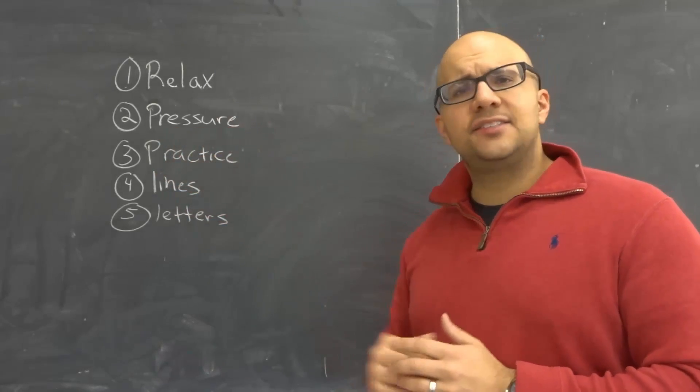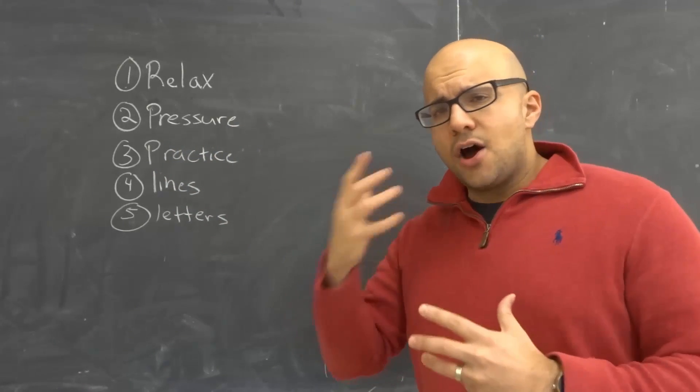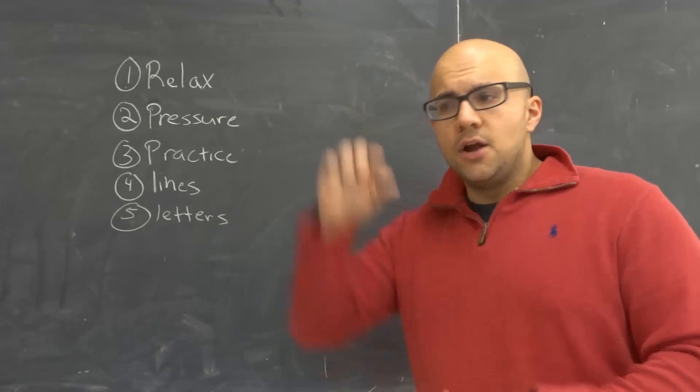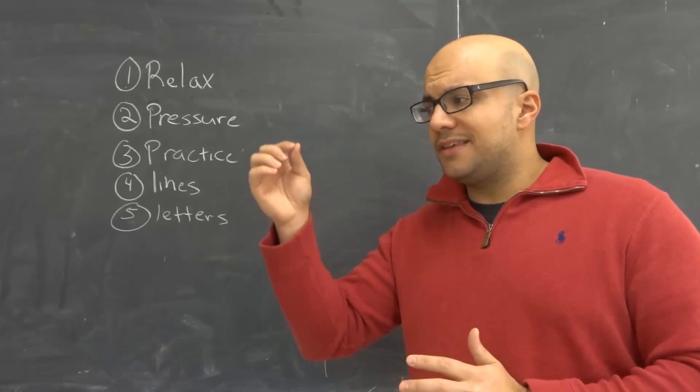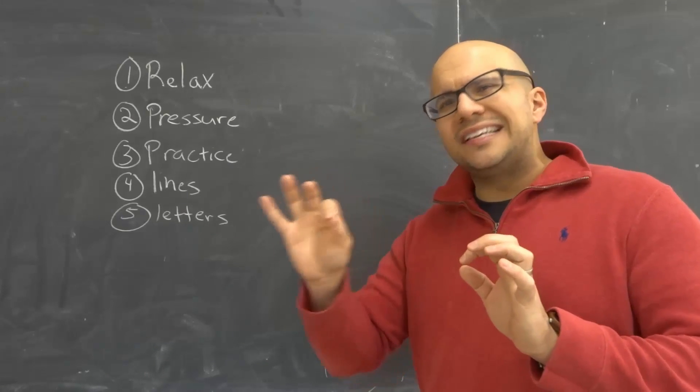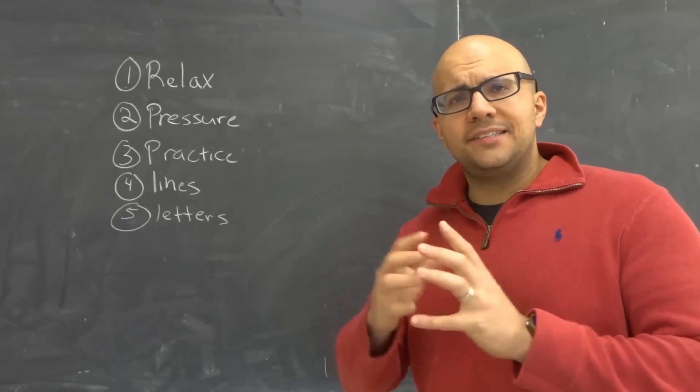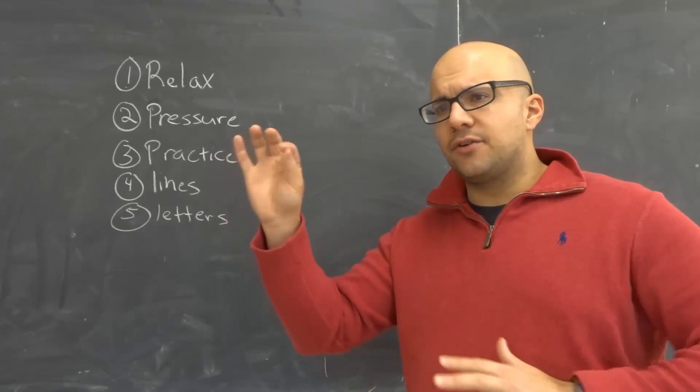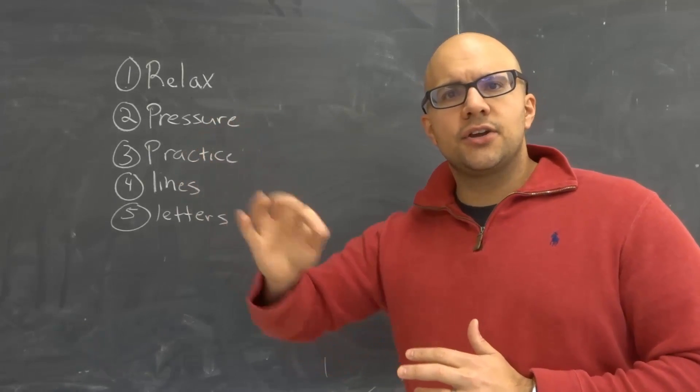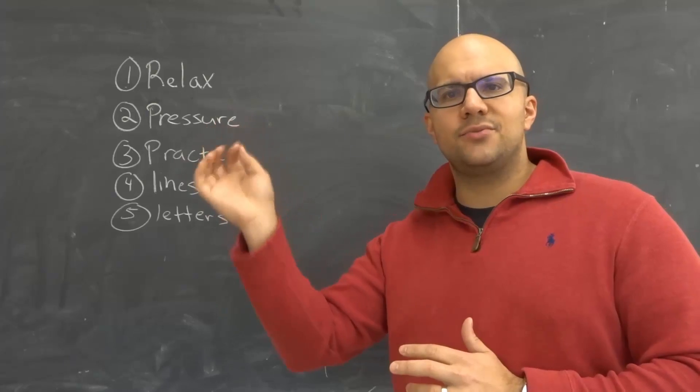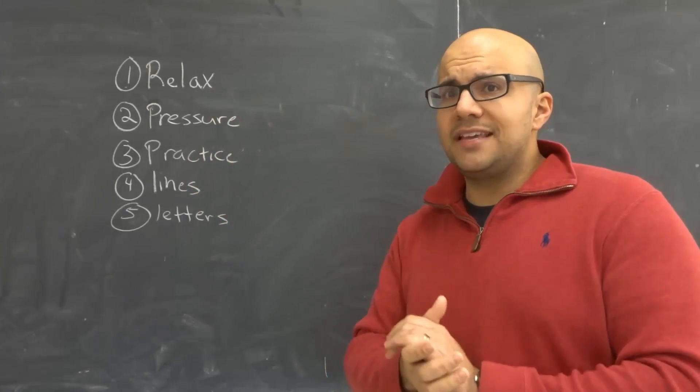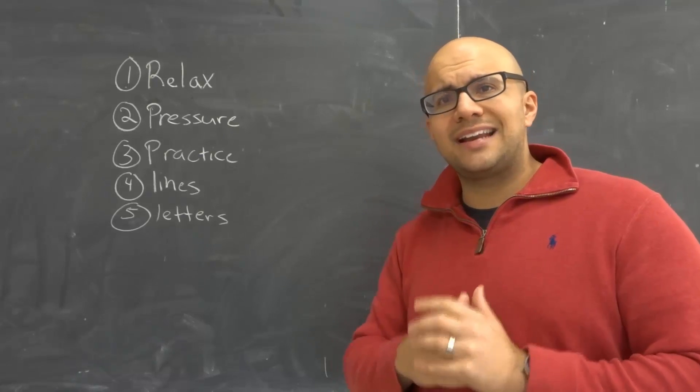Tip number two is pressure. Often times when we don't have great handwriting, we're putting a lot of pressure from the writing utensil onto the paper or onto the chalkboard. What you want to do is ease up the pressure. Because if you ease up the pressure, you're going to have greater movability with your hand, and when you have greater movability, you're going to have smoother handwriting and smoother motions when you're writing. So it's one of the best ways to improve your handwriting really easily.